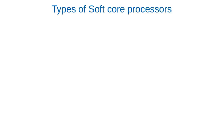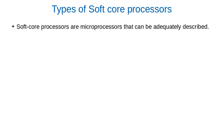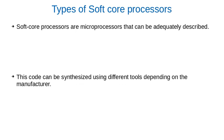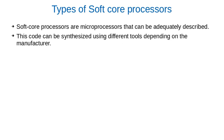Now we will discuss the types of soft core processors. Soft core processors are like microprocessors that can be adequately described for a specific application. The cores of these soft core processors can be synthesized using different tools depending on the manufacturer.